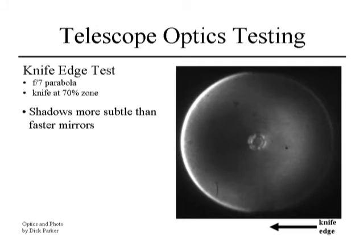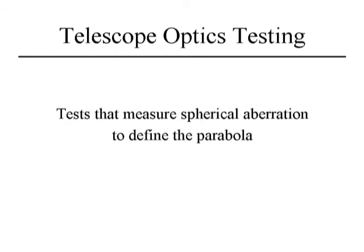Here's the same mirror but at F7. The F7 parabola is very close to the sphere, so the departure is small and the shadows are not very distinct. There's goodness and badness to that in conducting the test — you don't need to define quite as many radial zone points; just the center, the 70% zone, and the edge. Now that we have defined spherical aberration and shown that it produces a predictable result in our test return, can we use that principle to define our parabola? Within some sensible reason, yes.